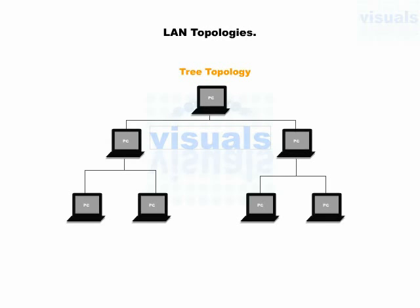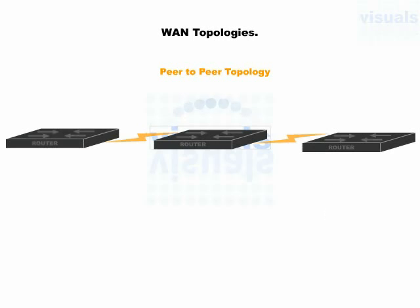The final LAN topology is tree topology. This is a kind of bus topology, but you will see multiple branches, and with each branch you will find multiple devices, as you can see in this tree topology. These are the topologies which belong to local area networks. Now let's move towards WAN topologies.